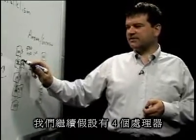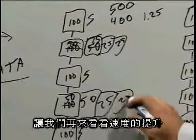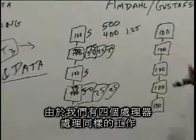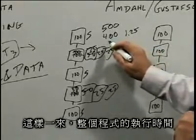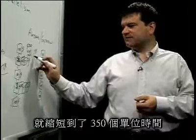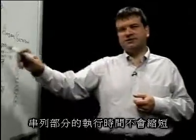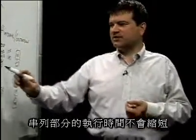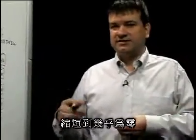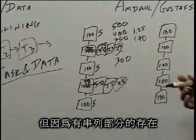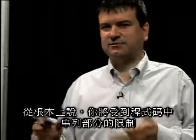We can continue this: with four processors, each parallel part runs in 25 units of time. You can see how this progresses — the execution time gets down to 350 units of time, representing a 40% speedup. The key point of Amdahl's Law is that the serial portions aren't getting smaller. We can envision using a huge number of processors to make those two parallel parts run in essentially no time, but the program still takes 300 units of time because we've left the serial portions behind. Amdahl's Law says you're going to be limited by the serial portions of your code.